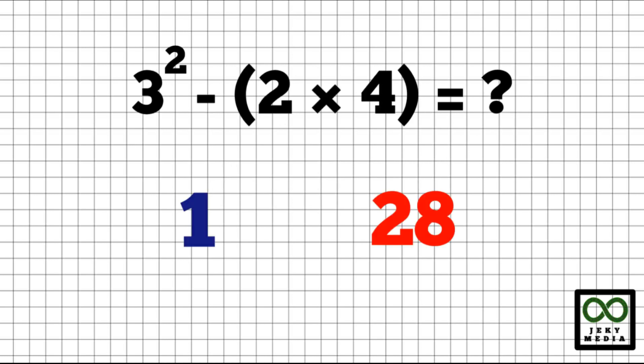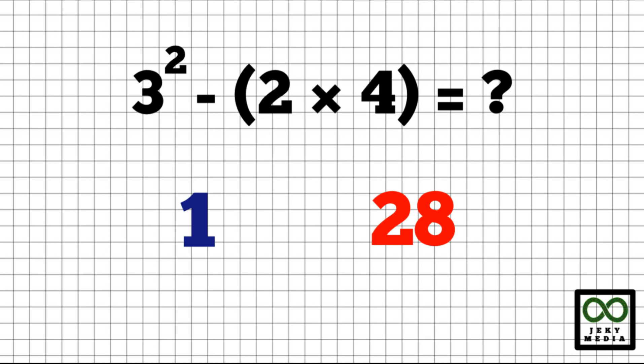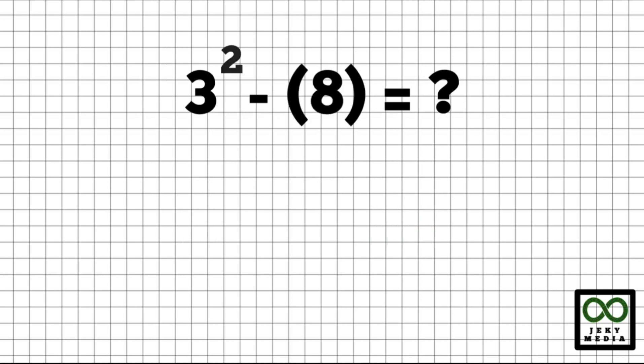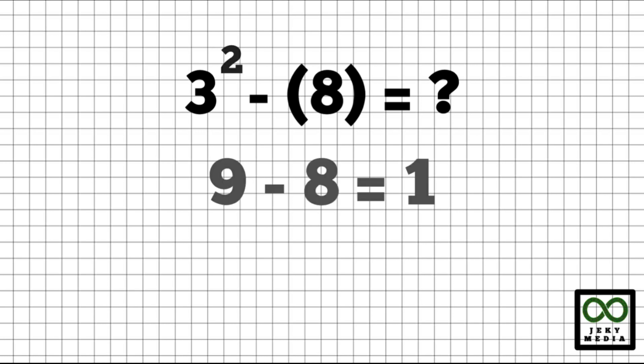Next, we have 3 squared minus the quantity inside a parenthesis, 2 times 4. Is the answer 1 or 28? Let's start with the parenthesis: 2 times 4 is 8. This will become 3 squared minus 8. 3 squared is 9, so this becomes 9 minus 8, which is 1. Did you get it right?